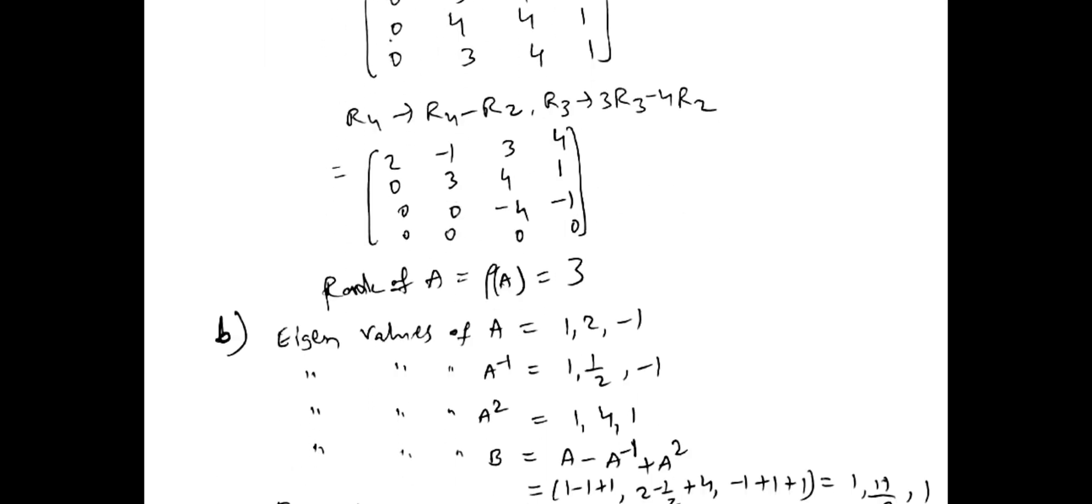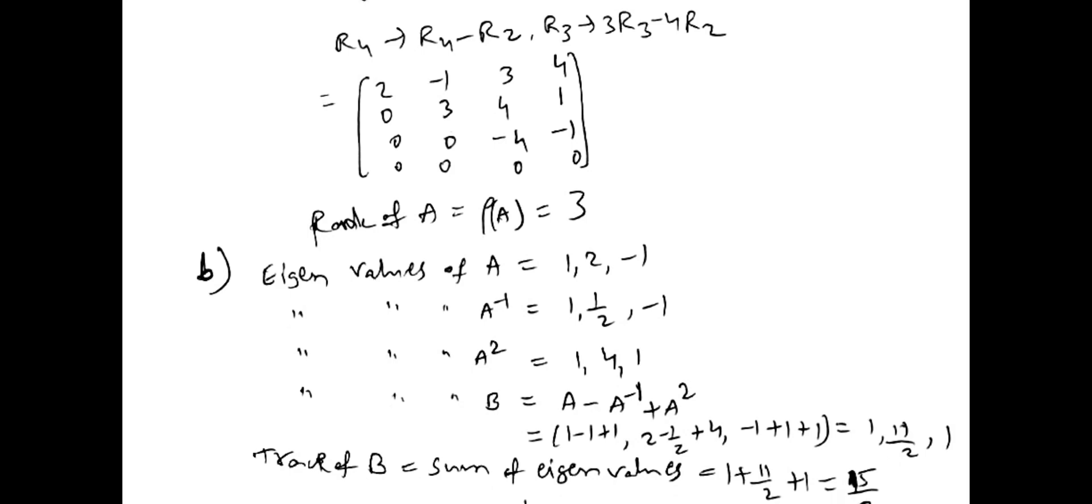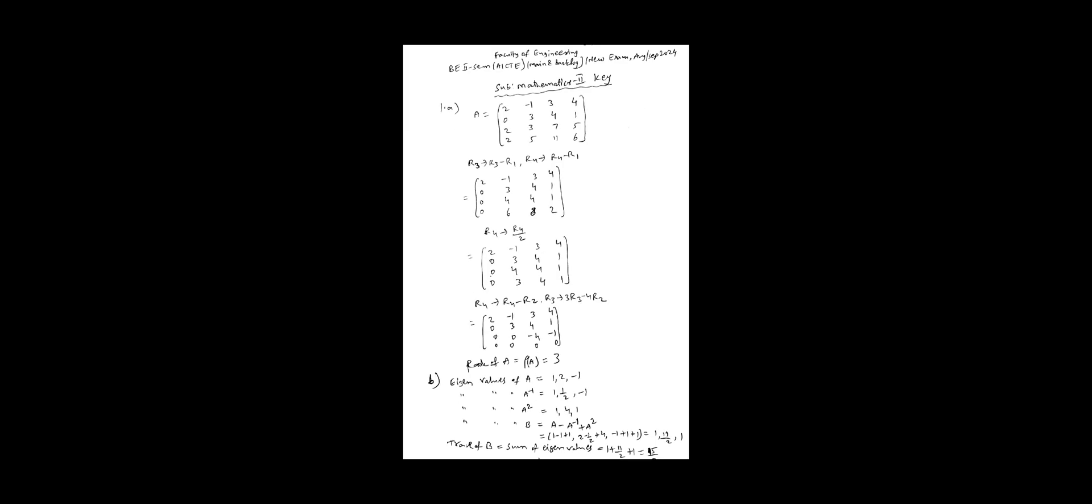Next second B bit mark. A value is what? We gave here eigenvalues 1, 2, minus 1. Then A inverse is 1, 1 by 2, minus 1. A square and B A minus A inverse plus A square. So total if you add we get 15 by 2 we get.